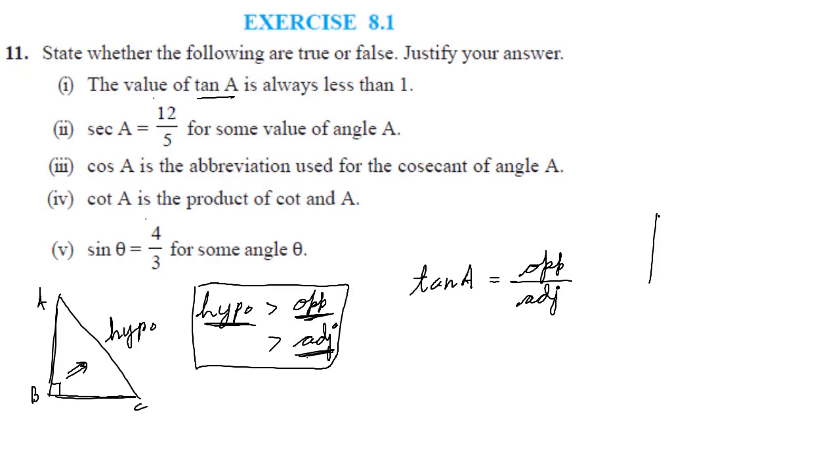What is the definition for tan? Tan is opposite divided by adjacent. Let's say for example this is a right angle triangle. This angle is 90 degrees. This angle is A, this is B, this is C. So this is the opposite side BC. This is the adjacent side. Now they are saying tan of A is always less than 1.